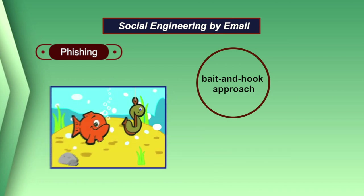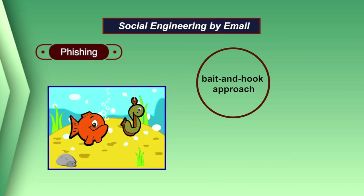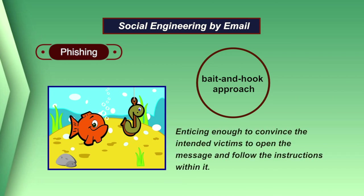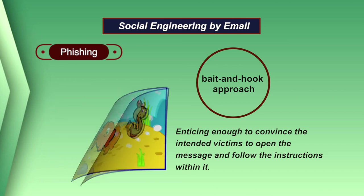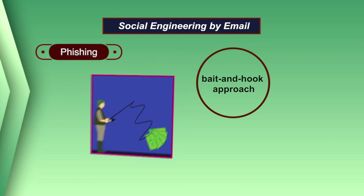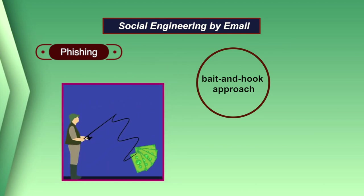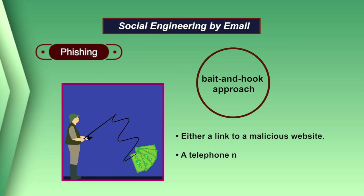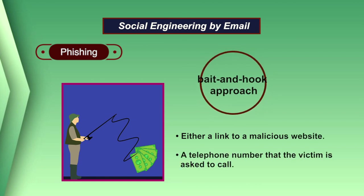The social engineering really takes place during the bait, which should be enticing enough to convince the intended victims to open the message and follow the instructions within it. The hook is the method whereby the social engineer gets information from the victims — either a link to a malicious website or a telephone number that the victim is asked to call.